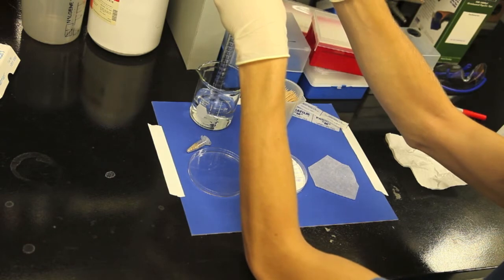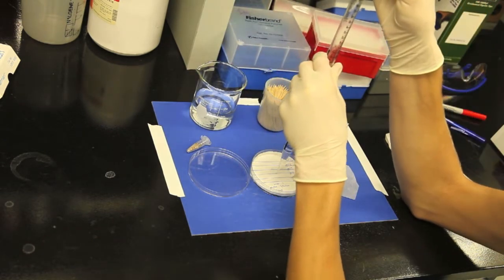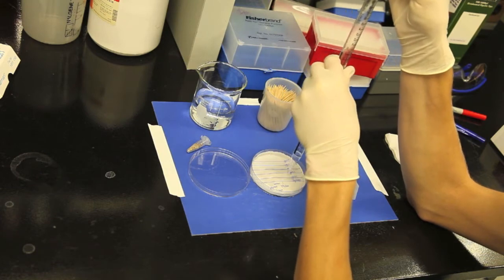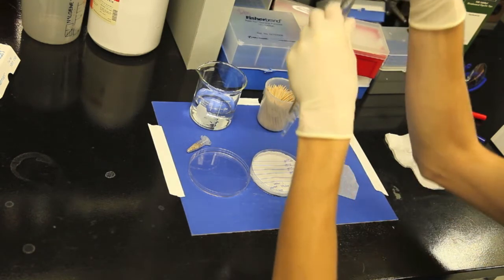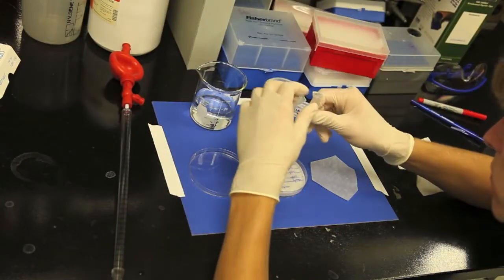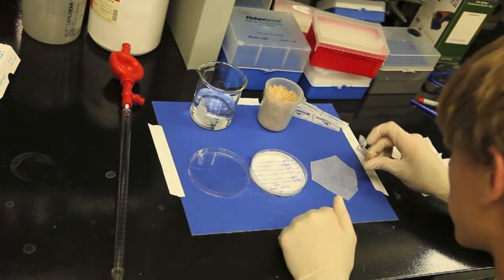Pipette six to eight milliliters of either water or gibberellic acid solution into each of your plates. Your goal is to soak the filter paper without leaving any standing pools of liquid. Once you've completed these steps for every plate, you're ready to spread the seeds.